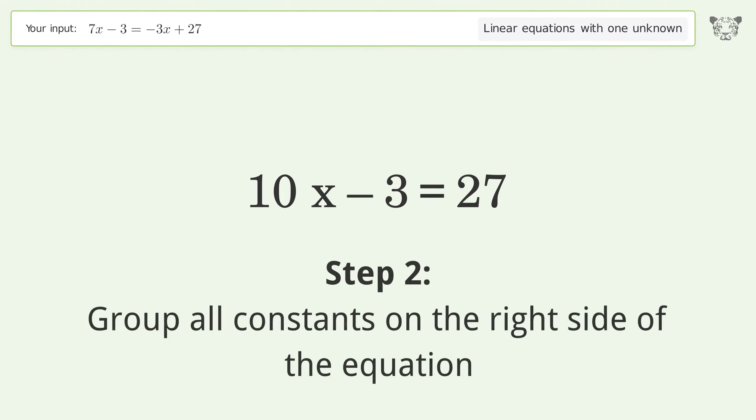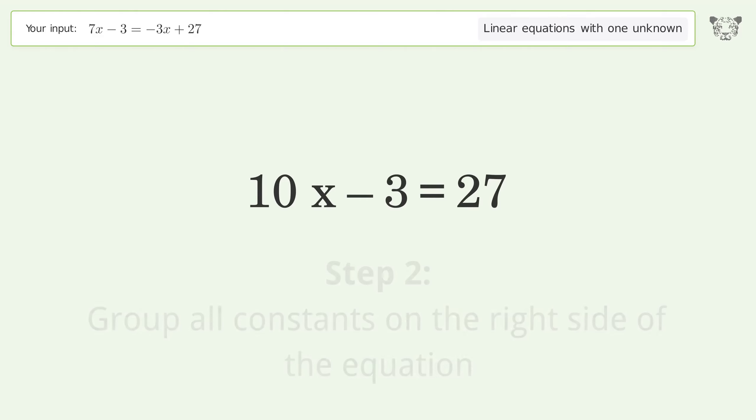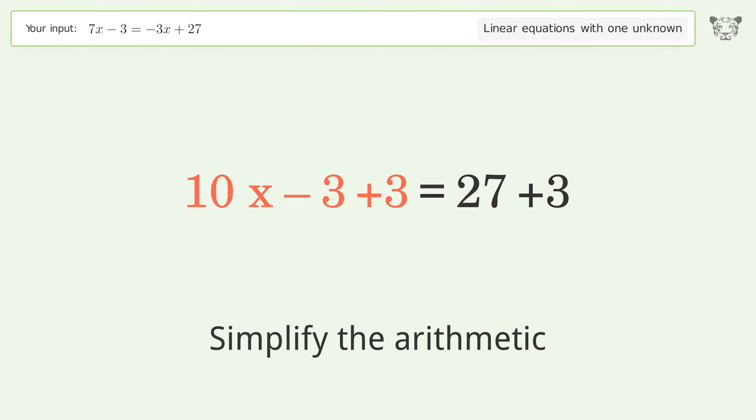Group all constants on the right side of the equation. Add 3 to both sides. Simplify the arithmetic.